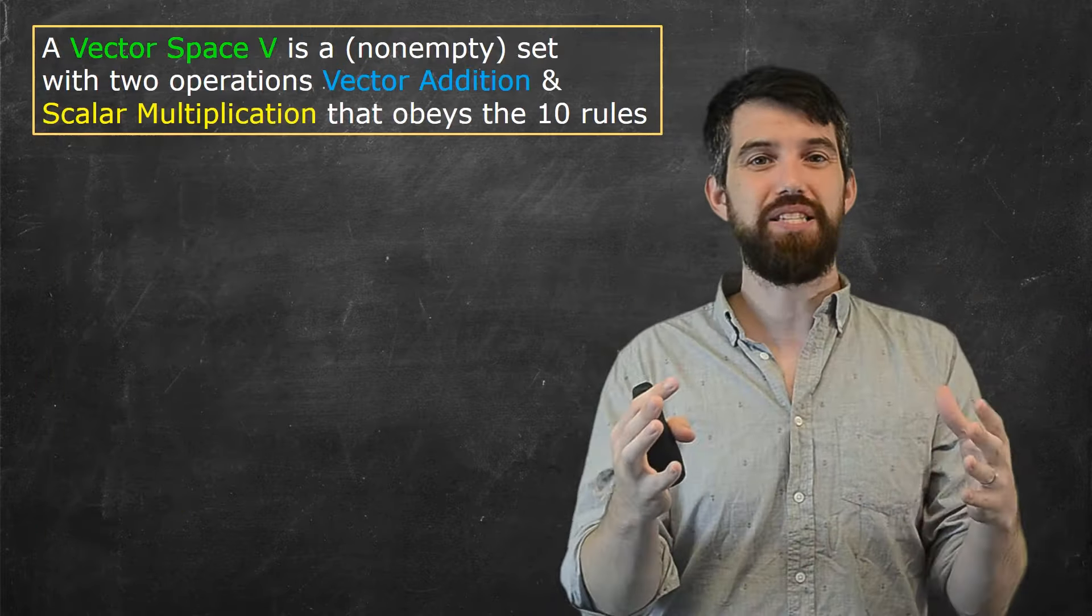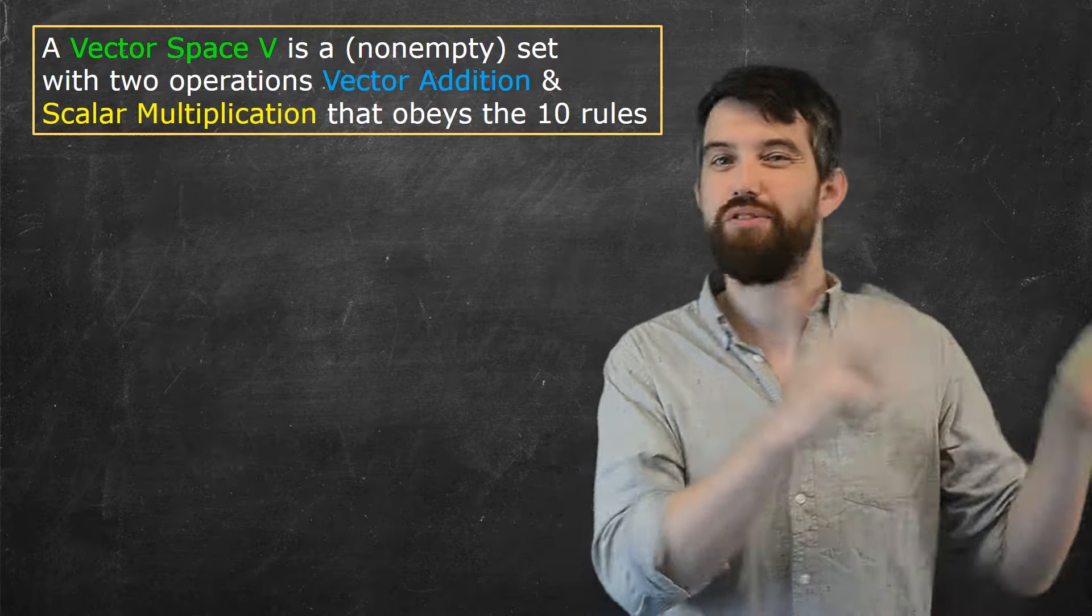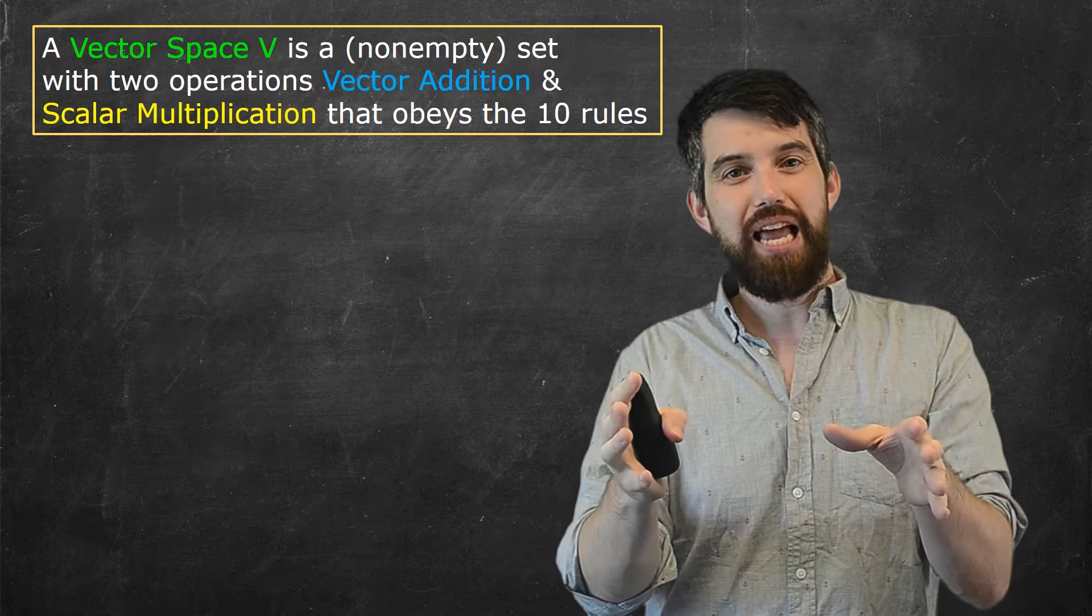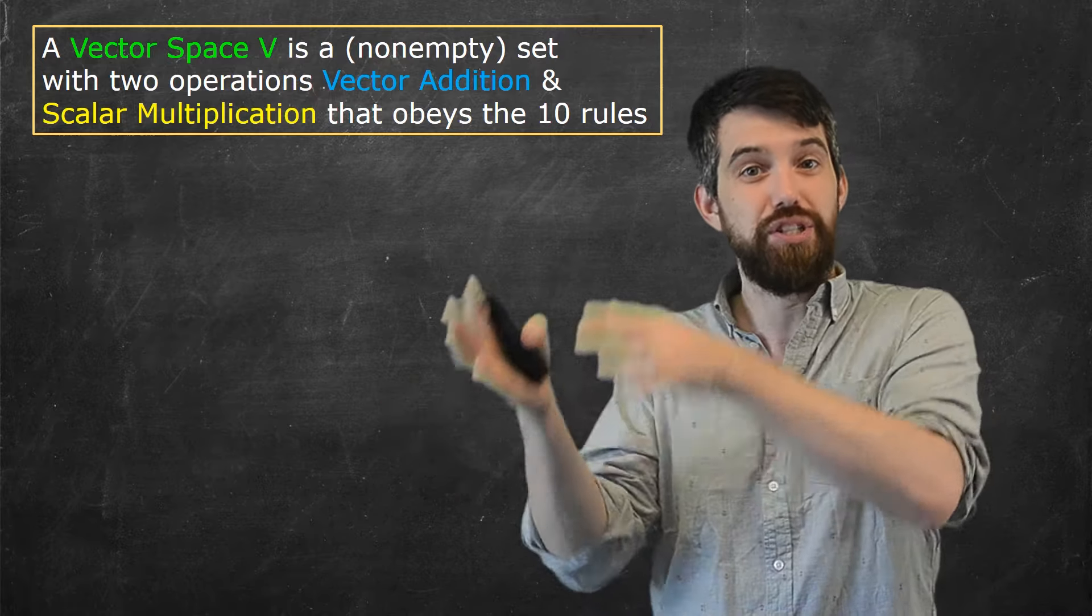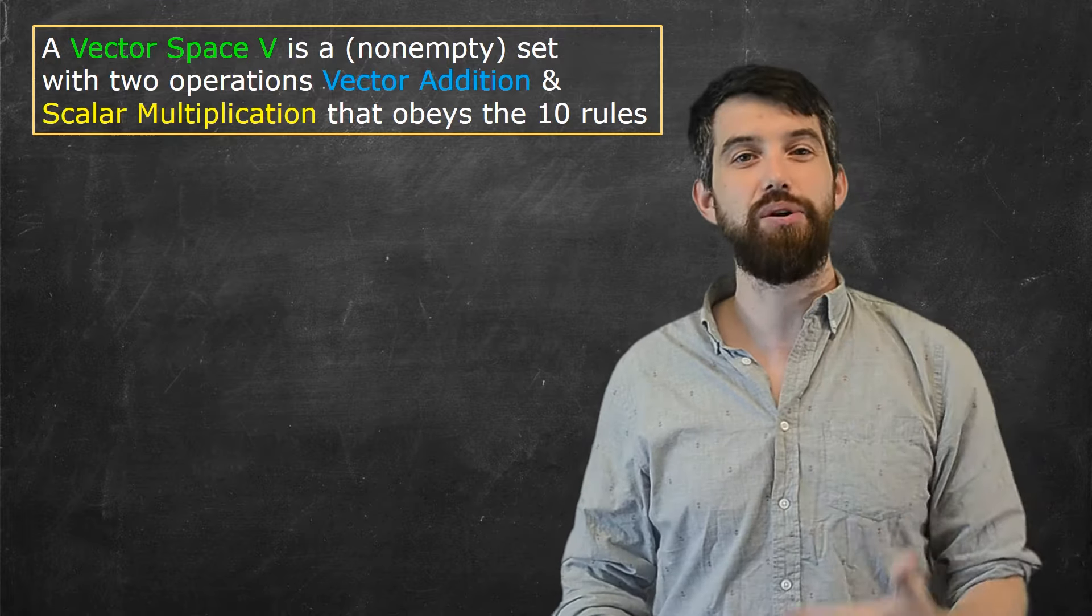So, a vector space is just some non-empty set. We don't really care about the empty set, it's sort of silly. It's a non-empty set that you have these two different operations, vector addition and scalar multiplication, and then they obey the entire list of ten rules.